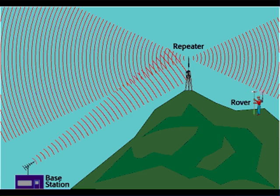The easiest way to resolve this is to use a radio repeater, which will simply relay the correction info. In the last few years, another option has started to be used, which is to use the internet to transport the correction data. Essentially, you would need an internet connection at your base station, such as a DSL line, and then an internet connection at your rover. Because your rover needs to be mobile, most people use a data connection from their cell phone provider.